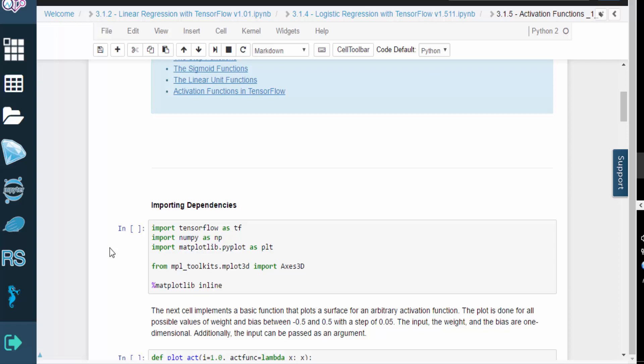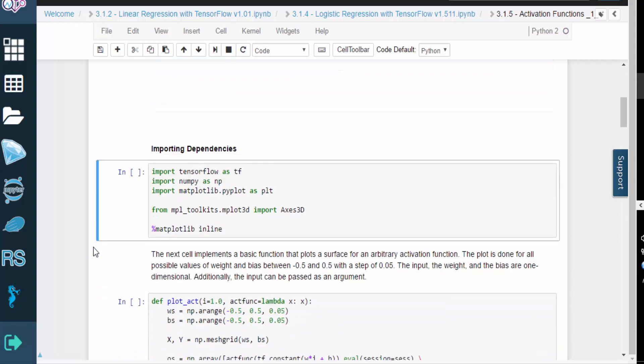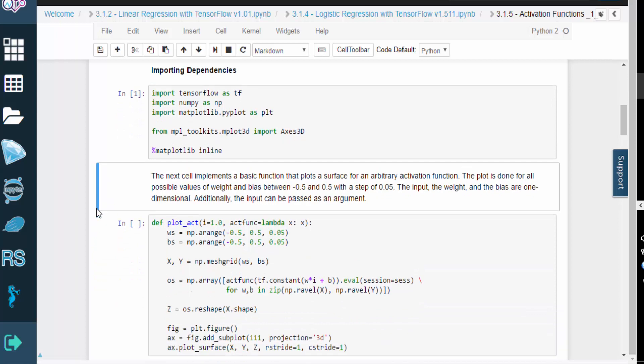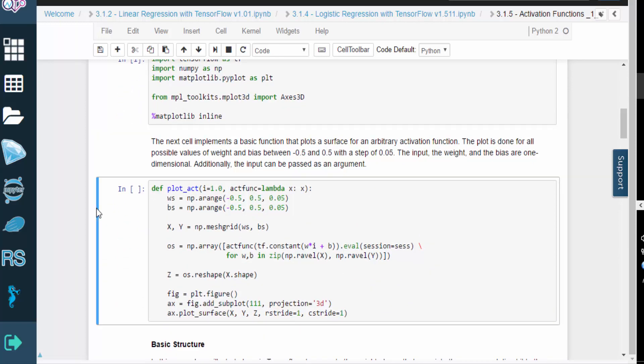Activation functions are a cornerstone of machine learning. Generally speaking, a processing unit will pass its input through an activation function to generate the output, so the choice of function ends up playing an important role. We'll go through some of the most commonly used functions in order to develop a more intuitive understanding, but before we begin, we need to import a few dependencies.